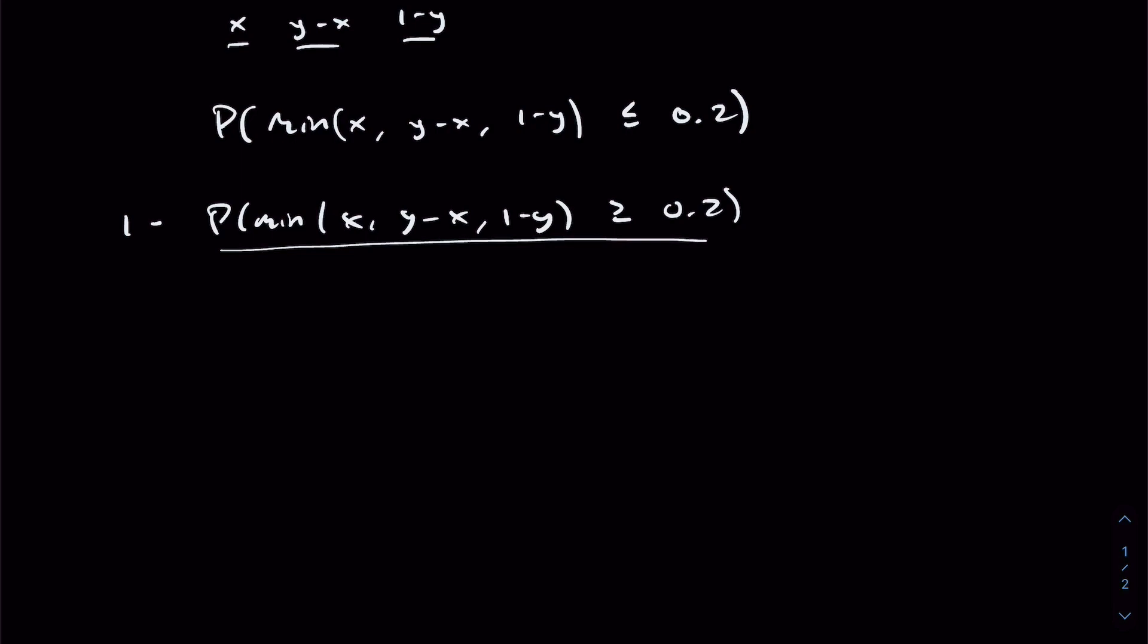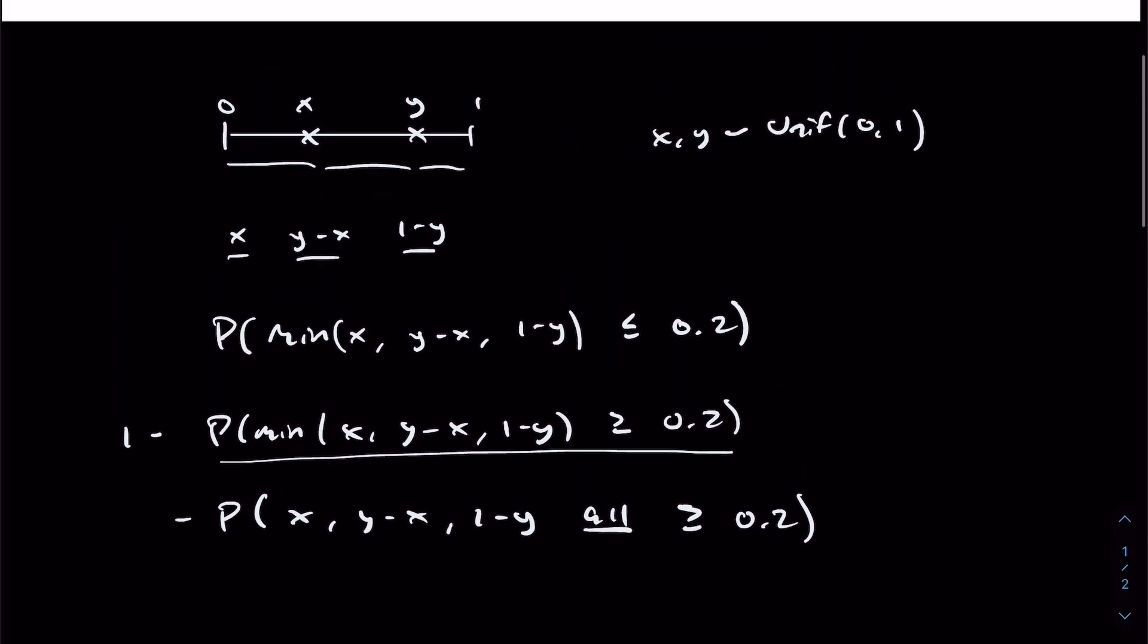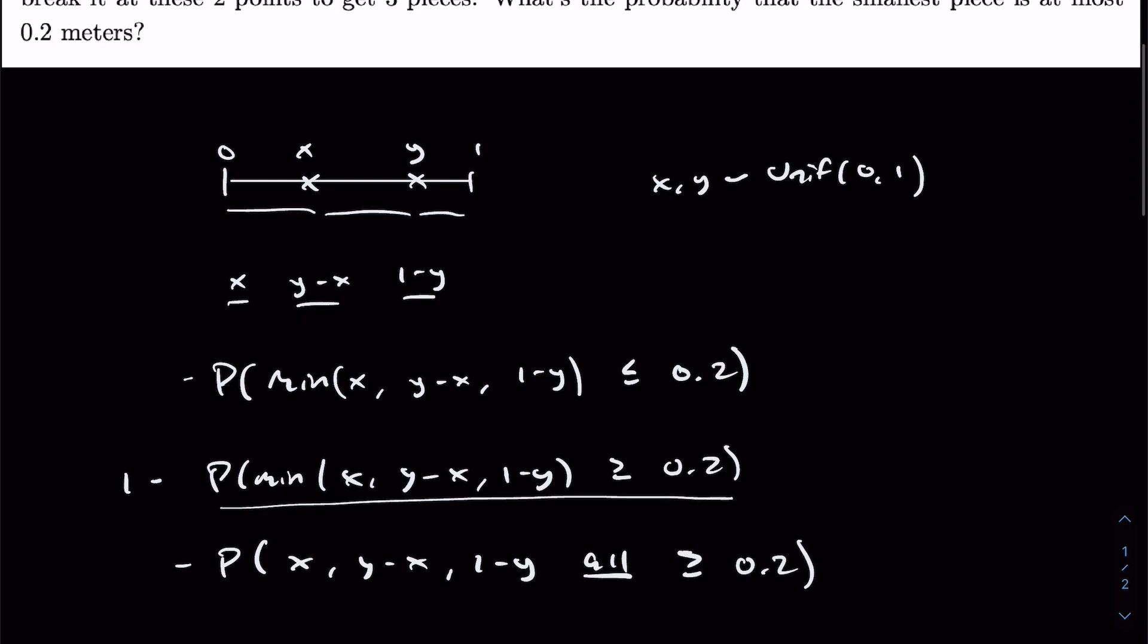To further evaluate this statement, we can think intuitively. If the minimum of the three lengths is greater than 0.2, it also means that each respective length of the three sub-pieces are all greater than 0.2. Because if the minimum is greater than 0.2, that means all of them must be greater than or equal to 0.2. So we'll say that x, y minus x, and 1 minus y are all greater than or equal to 0.2. This, in my opinion, is a much easier expression to evaluate than our original one involving a minimum function.